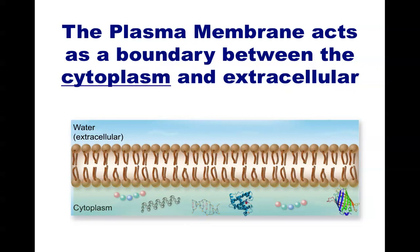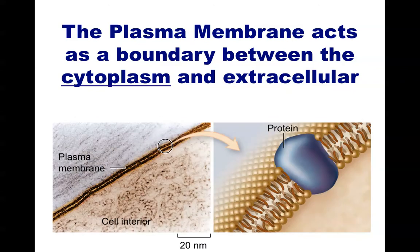The inside of the cell is normally known as the cytoplasm. This is where a lot of the reactions and activity in the cell takes place. Here is another view of a typical membrane. On the left, you can see a membrane separating the extracellular space from the cytoplasm. Note the scale on this electromicrograph. You can also see in the cartoon representation a lipid bilayer with a protein spanning the width of the layer.